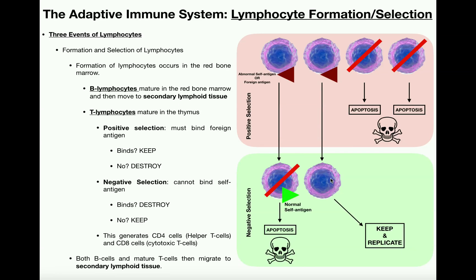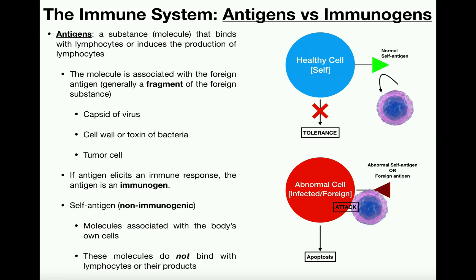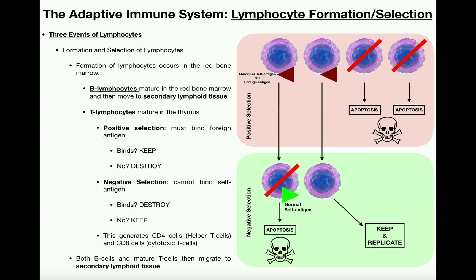Once these B cells and T cells are mature, they migrate to secondary lymphoid tissue such as the lymph nodes, the spleen, tonsils, and so on. Hopefully you understand the difference between antigens and immunogens, and also understand how lymphocytes are selected to bind to foreign antigens while not binding to our normal self-antigens — that's positive and negative selection, respectively. Please make sure to like this video and subscribe to my channel for future videos and notifications. Thank you very much.